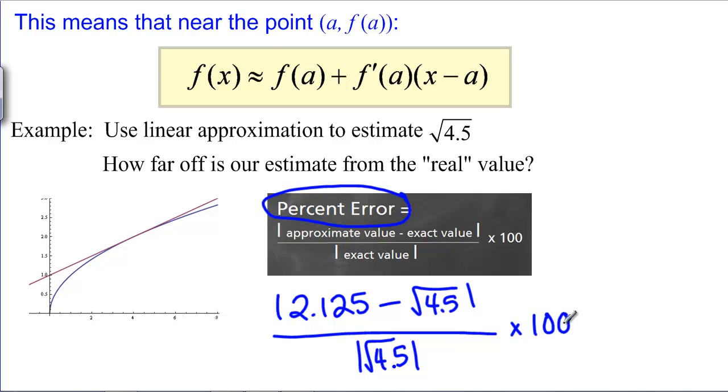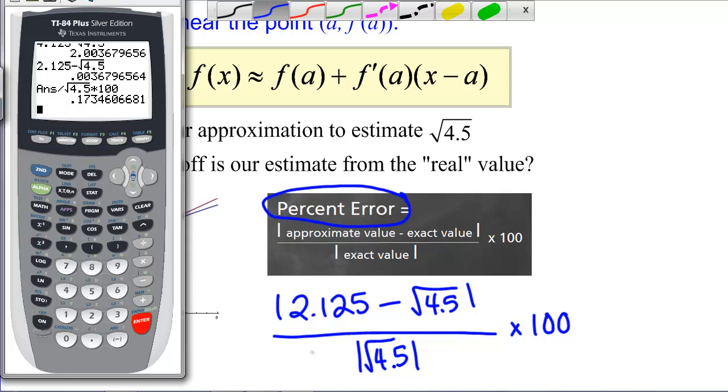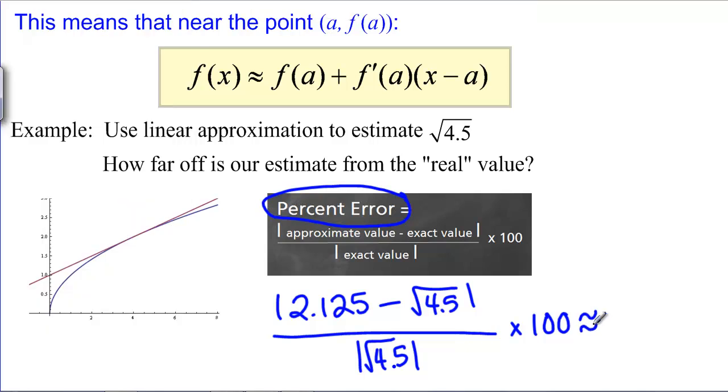This is going to give us a percent that kind of tells us how bad our error is. If we're going to put this in the calculator, we've already calculated the top quantity there and so we're going to take that and divide it by square root of 4.5 and then multiply by 100. We get .1734 and this is of course approximate because we don't know the complete square root of 4.5 but .1734 dot dot dot. We did a pretty good job estimating square root of 4.5.